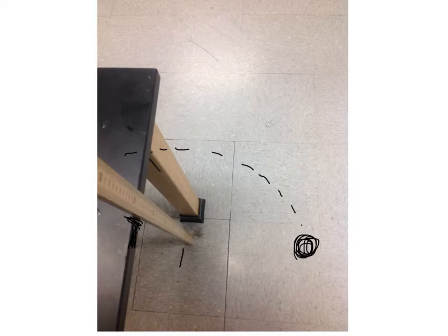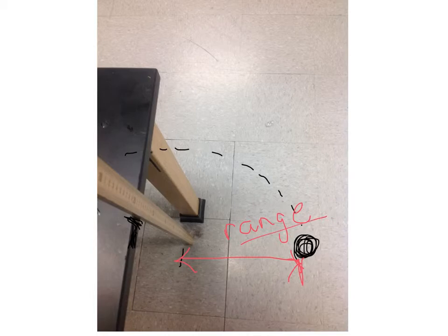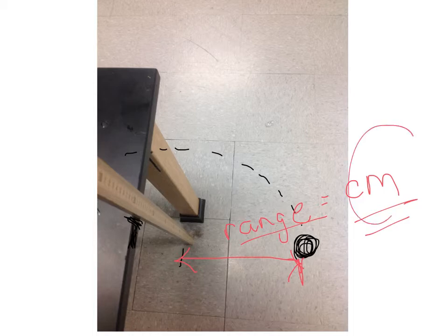When you roll the ball off, it will land somewhere out here. You want where it first hits, not where it ends up at, but where it first hits. Once you get that location, you measure from the edge of the table that you marked to where it hit. This is your range. It needs to be in centimeters. We're keeping everything in centimeters.